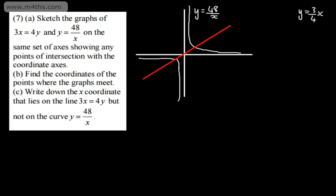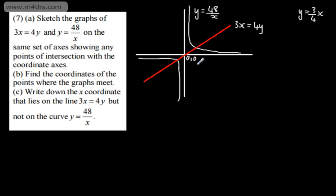So there we go, that looks perfectly fine. Remember, this is just a sketch. So we have 3x equals 4y on the diagram. We need any points of intersection with the coordinate axes — well we can see that it's just going to be this point, (0, 0). The point where the line crosses the coordinate axes. This reciprocal graph will never cross the coordinate axes. In part b, we need to find the coordinates of the points where the graphs meet. So what we're looking for is this point here and this point here.